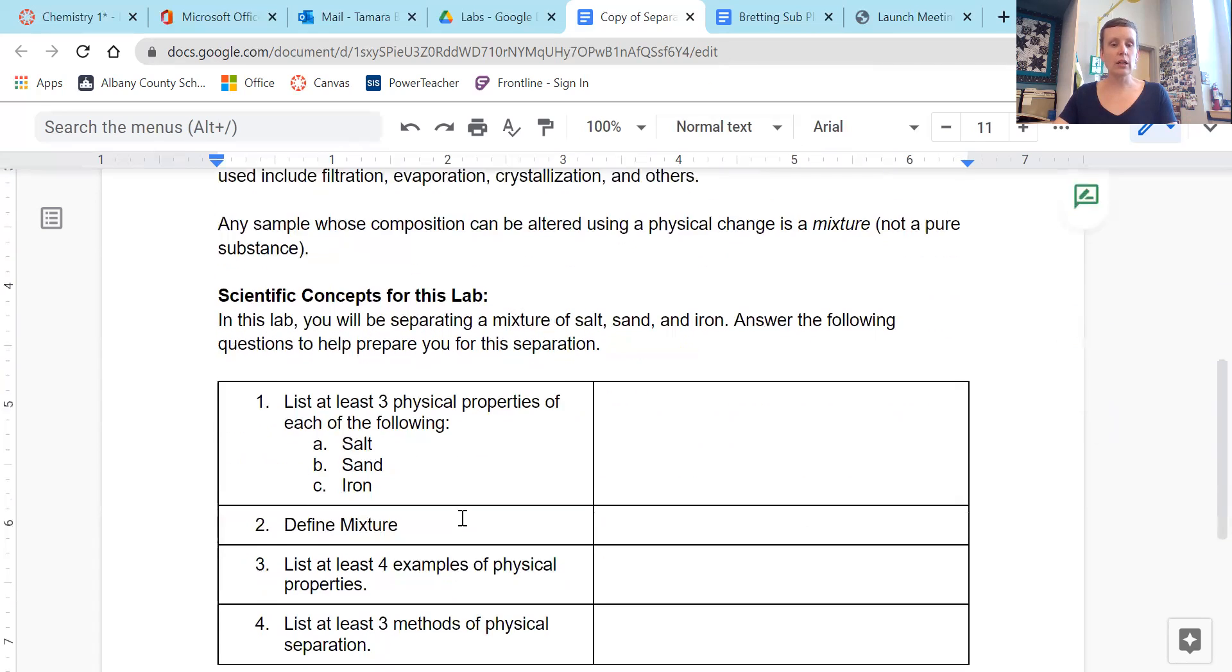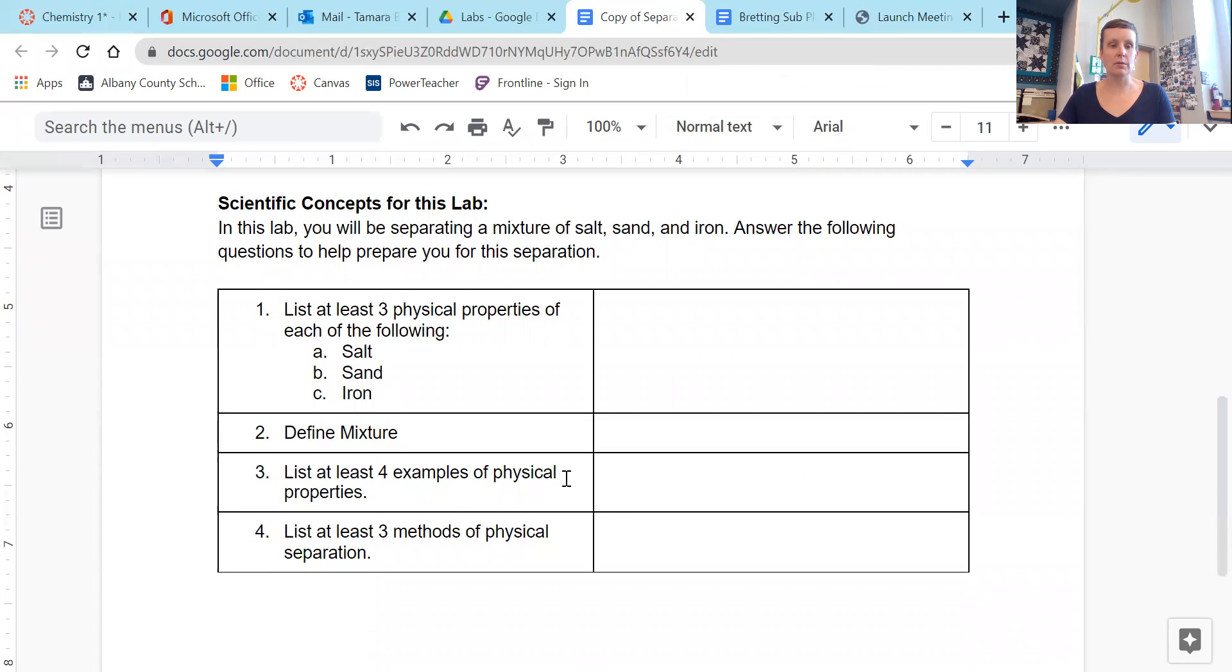So here's our section with scientific concepts. In this lab, we are separating a mixture of salt, sand, and iron. Answer the following questions to help prepare you for this separation. So over here, list at least three physical properties of each of the following. We'll start with A, salt. Physical properties of salt.